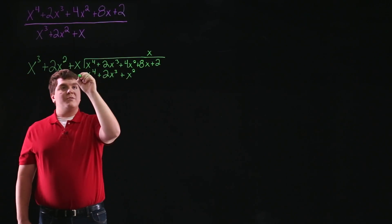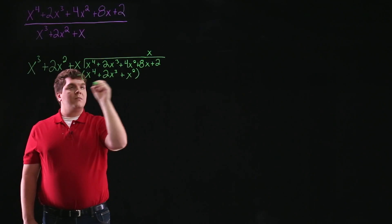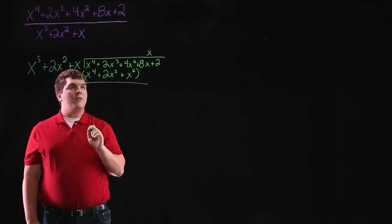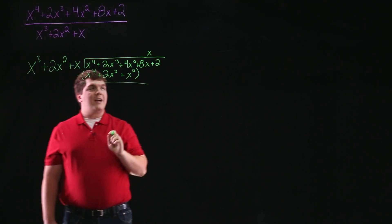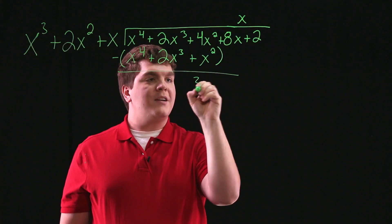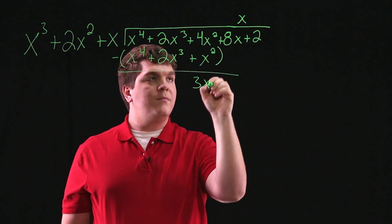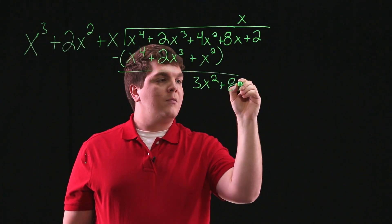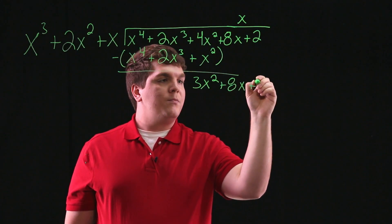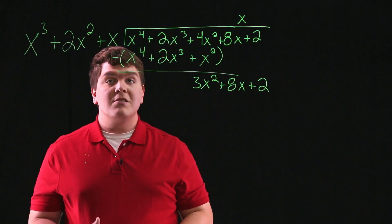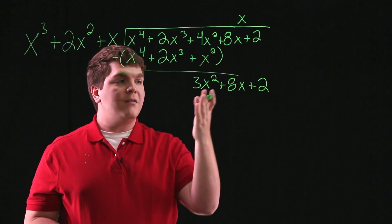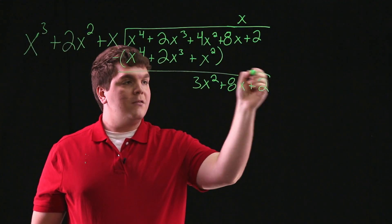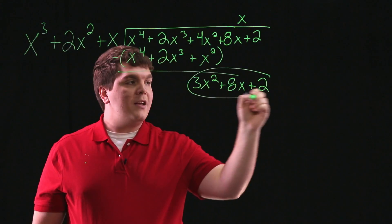And here we subtract. So we have 0x to the fourth, 0x cubed, we have a 3x squared, and we bring down a plus 8x plus 2. Now since there's nothing that we can multiply x cubed by to get 3x squared, this right here is our remainder.